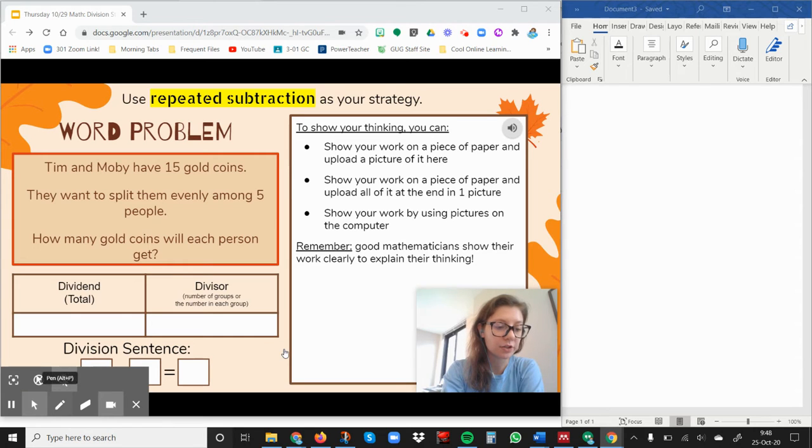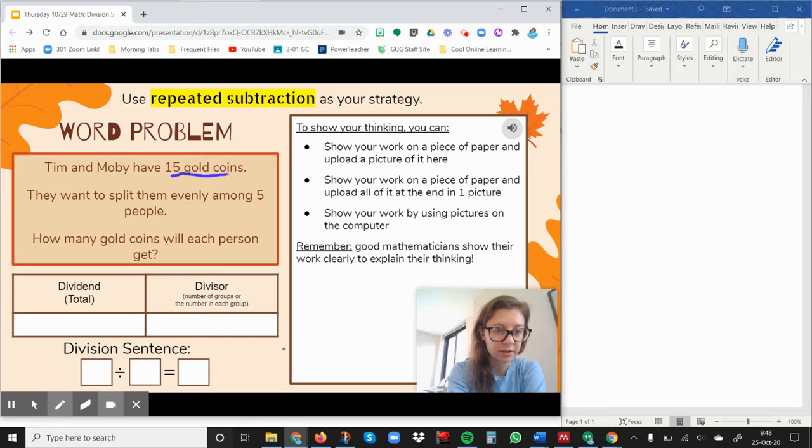So we know that our total is 15 gold coins. That's how many they have all together. Then we know that they're splitting them evenly which tells us they're going to have equal groups among five people.